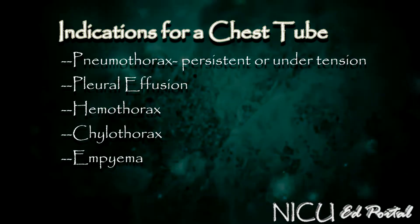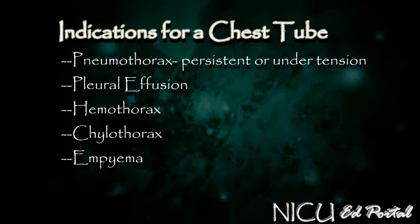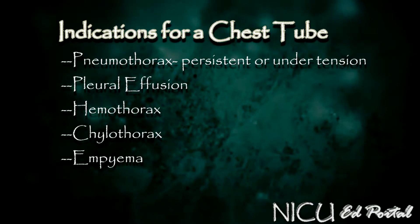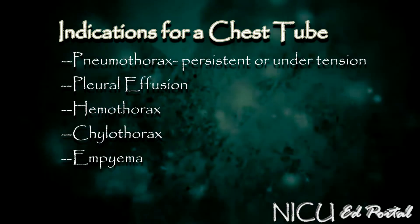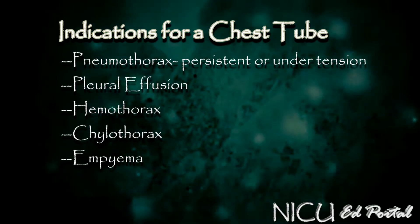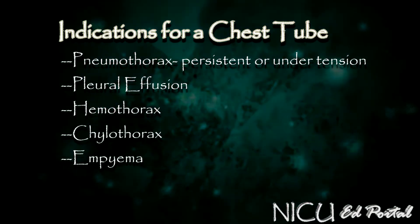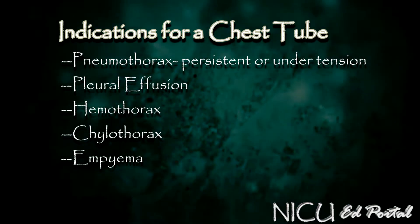The indications for placing a chest tube include a tension pneumothorax — one that hasn't resolved with needle thoracostomy — a pleural effusion, a hemothorax, chylothorax, or an empyema.